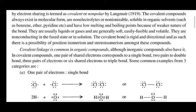Covalent compounds have low melting and low boiling points because of the weaker nature of the bond, as covalent bonds involve only the sharing of electrons. They are usually liquids or gases, and are generally soft, easily fusible, and volatile.